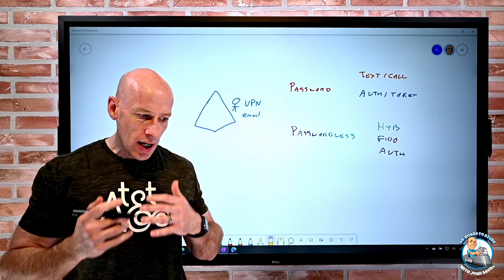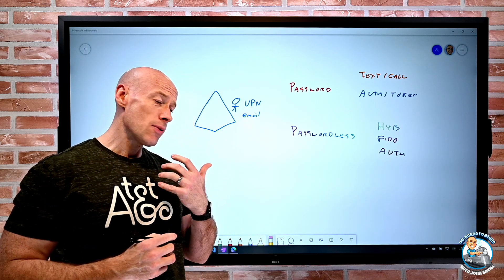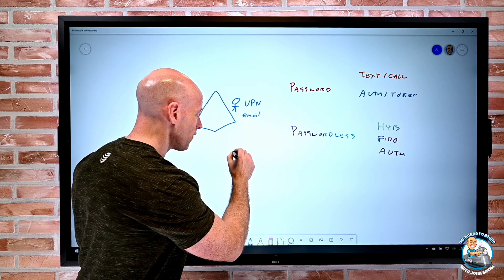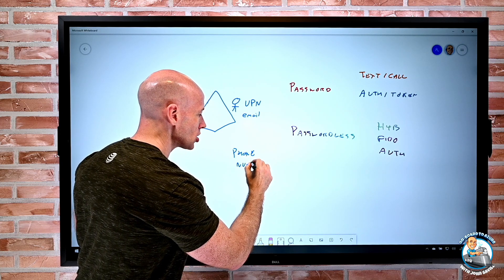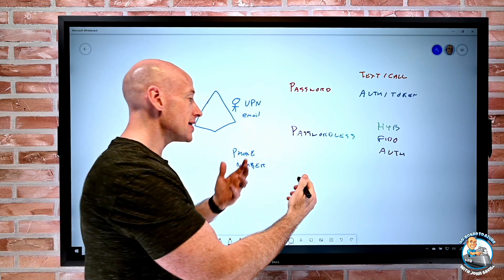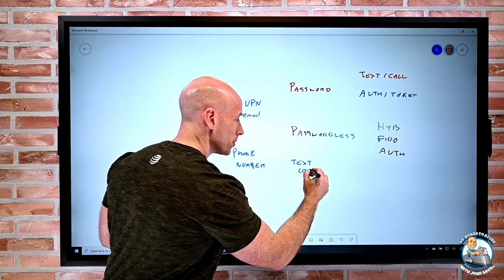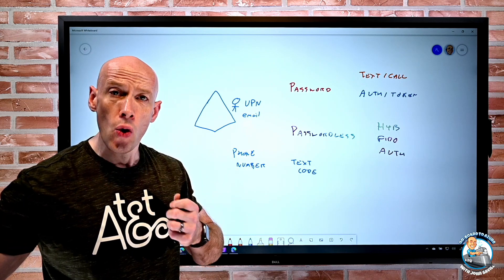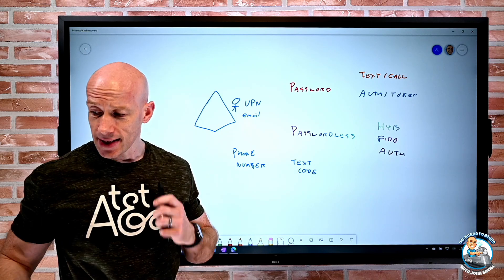And so one of the things that you can now do for those people is you can essentially have your phone number as what you can actually sign in with, and then you'll get a text message with a code. And that's what you can use to sign in. So all I need to know is my phone number and be able to receive a text message.